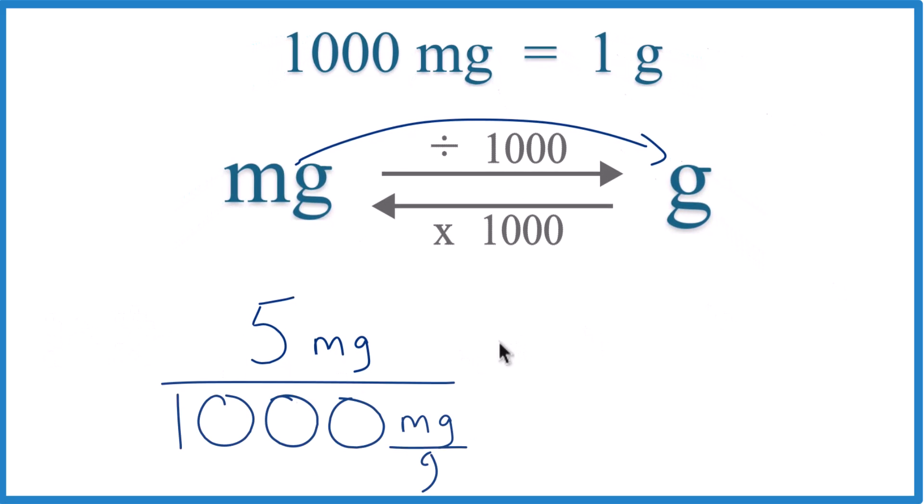Like this. So really, we're just dividing 5 by 1,000. But if you look at the units, we have 5 milligrams, and on the bottom, we have 1,000 milligrams per gram. 1,000 milligrams in 1 gram.